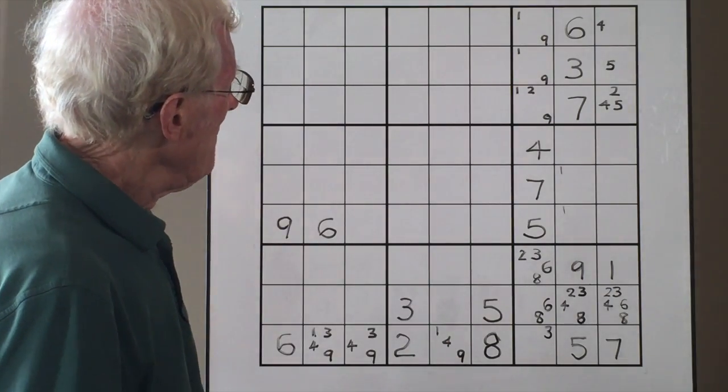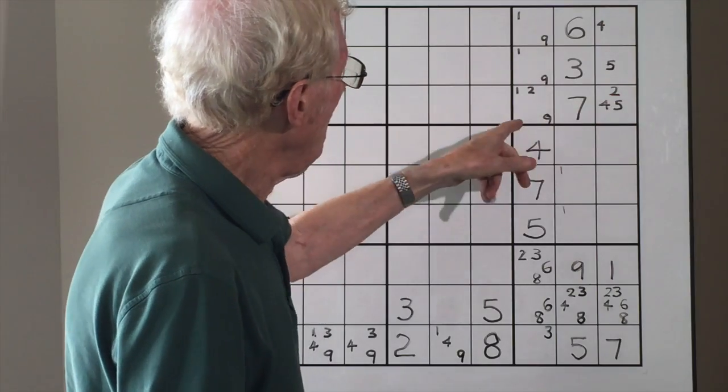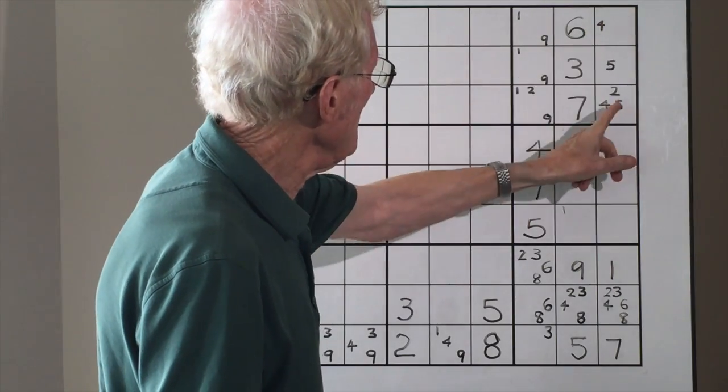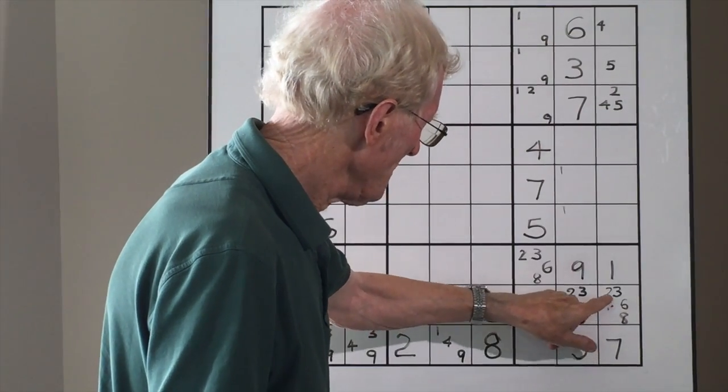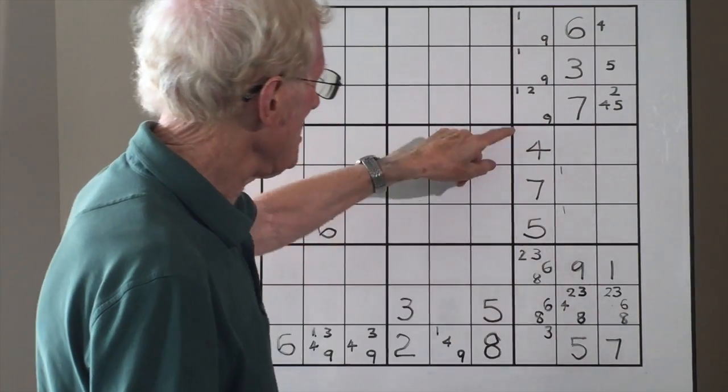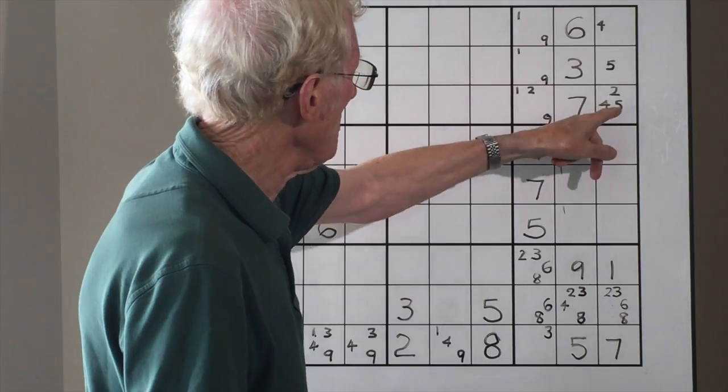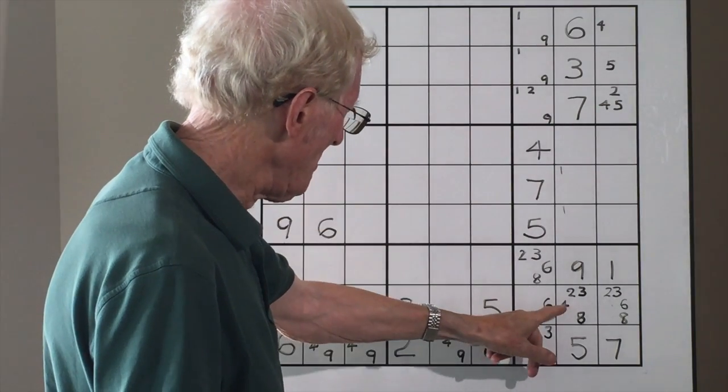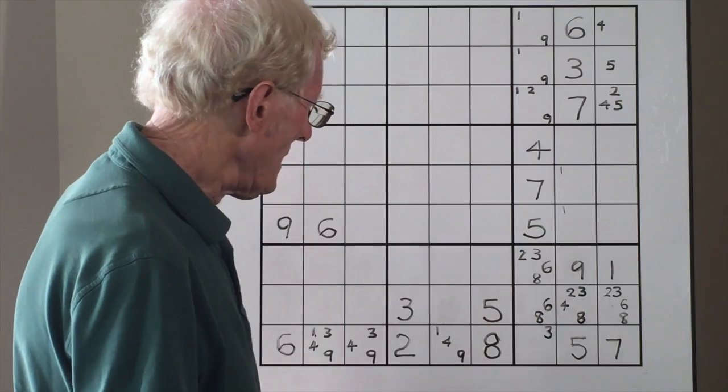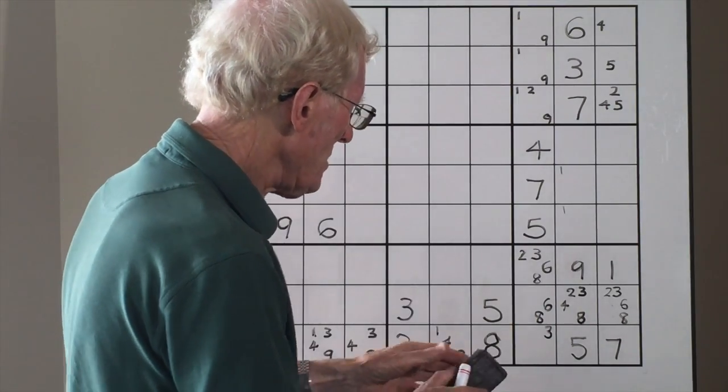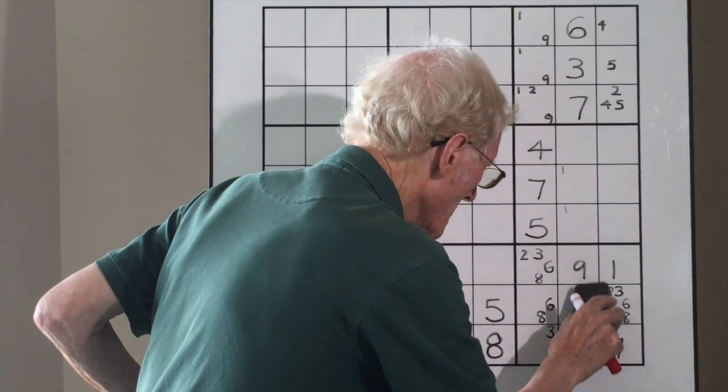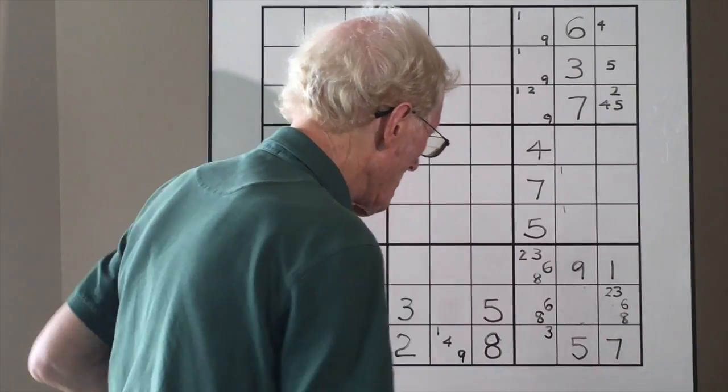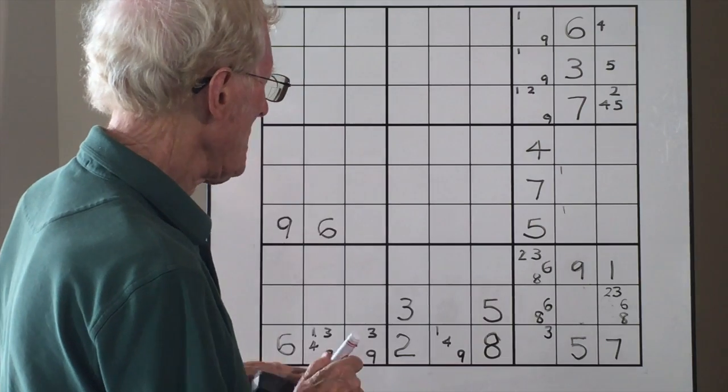was that over on this block, there's a four that's only found there and there, which means the rule of exclusion, we can get rid of that four. But I also noticed there's a four here. So if there's a four on the right, there's a four on the left, there has to be four in the middle here. So that means we can erase all these little numbers and put a four in.